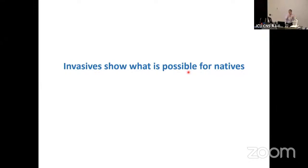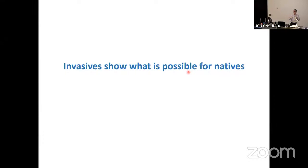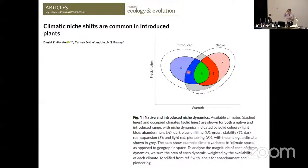Wrapping up: the message is clear that invasives are rapid and becoming even more rapid when introduced into other habitats. But the interesting thing is that invasives are very good study systems to understand what will happen to natives — particularly relevant when thinking about climate change. When an invasive plant is introduced into a non-native region, it is experiencing a different climate, and in many cases the climate is actually very different. A 2021 paper states that climatic niche shifts are common in introduced plants.